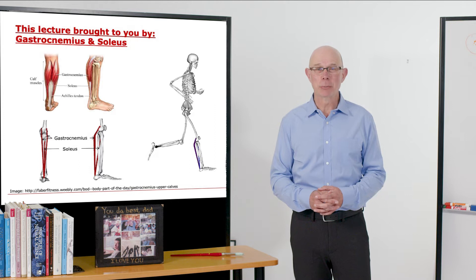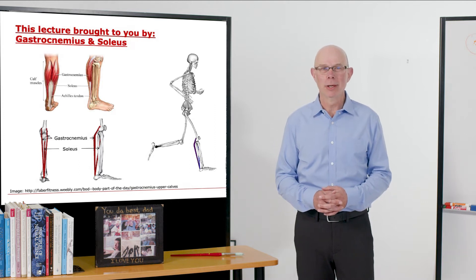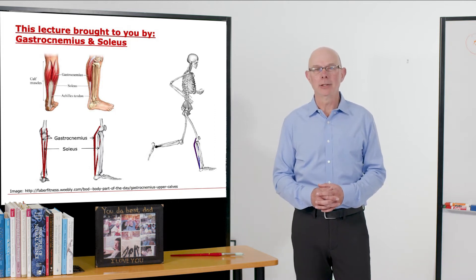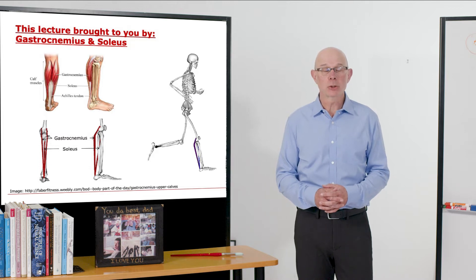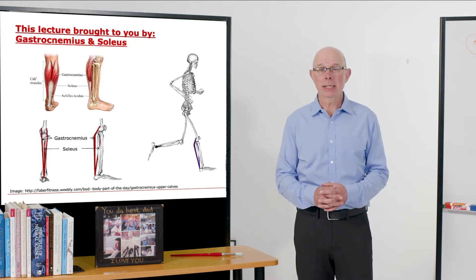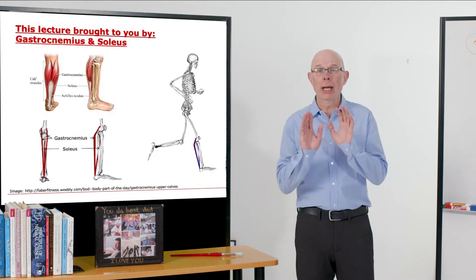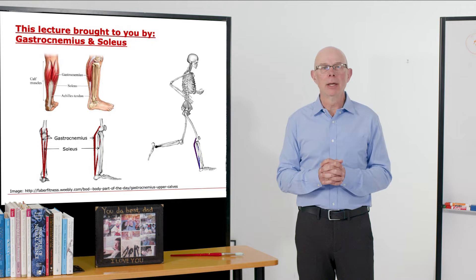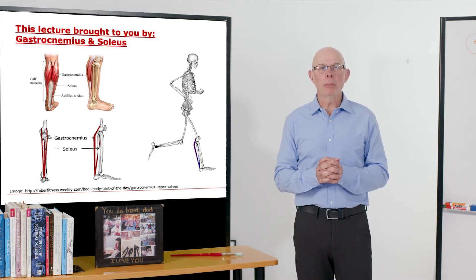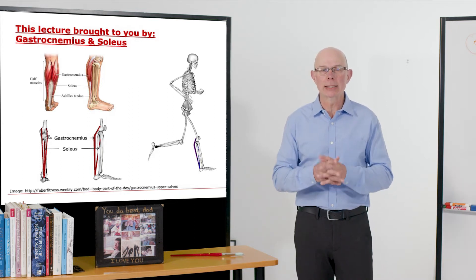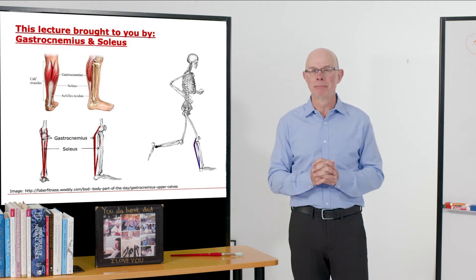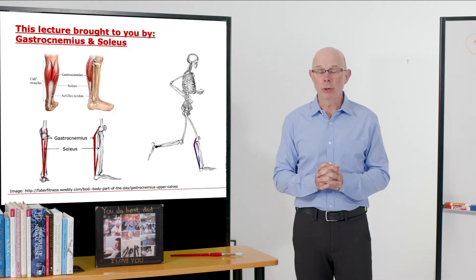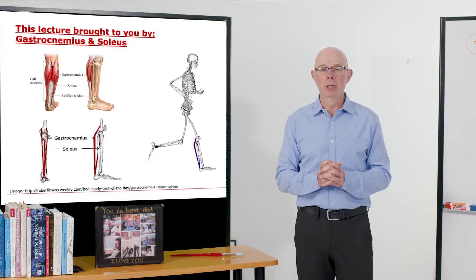This lecture is brought to you by two muscles: the gastrocnemius and soleus. These muscles are located in the calf area. The gastrocnemius has two heads that cross the knee. The soleus is simpler and deeper. Together, both the gastrocnemius and soleus attach to the Achilles tendon. These muscles generate very large forces.